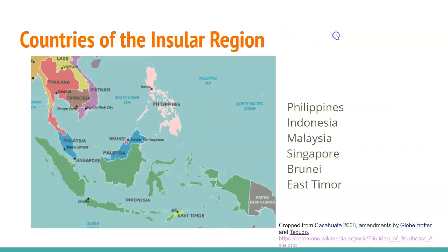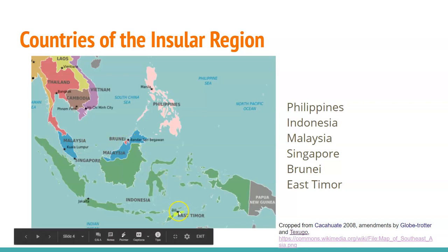Moving on to the island portions of this region, we have the Philippines, Indonesia — all this portion in green — Malaysia, Brunei, East Timor, also known as Timor-Leste, and Singapore.